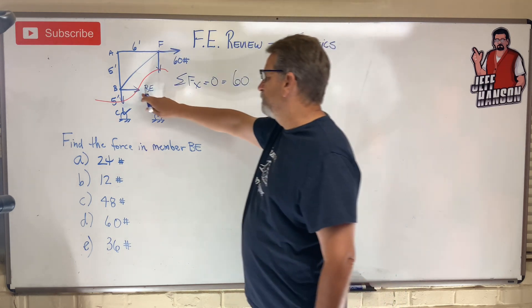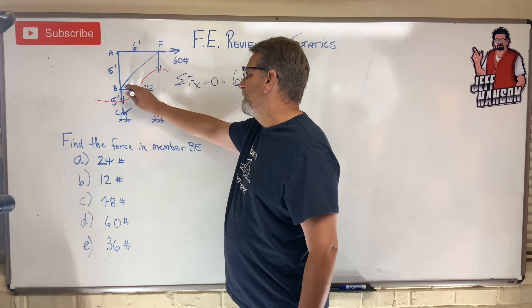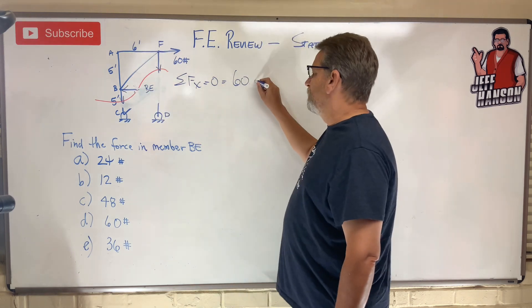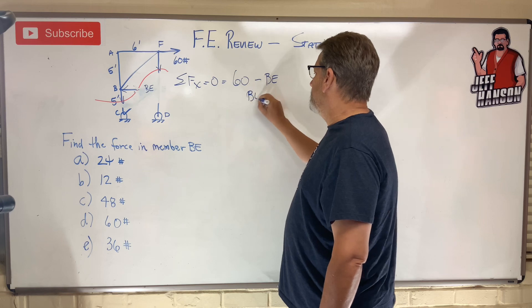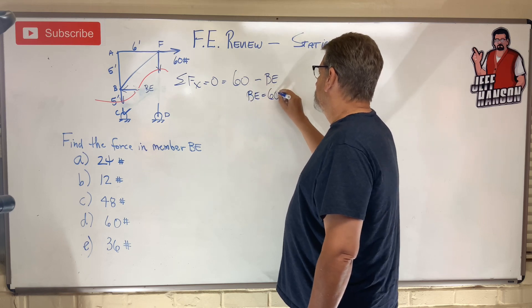Oh, I drew that in the opposite direction, didn't I? So he has to go the other way, doesn't he? So minus B.E. Therefore, B.E. equals 60 pounds. No work.